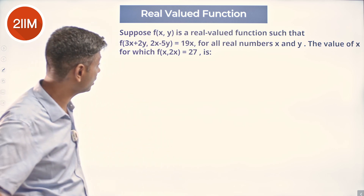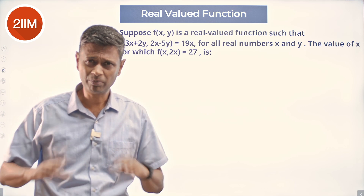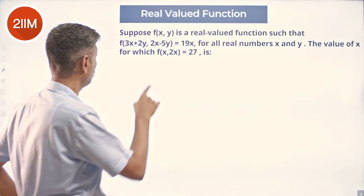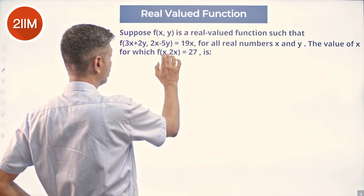f(x, 2x) = 27. You have something to start with. This has two variables; this has only one.